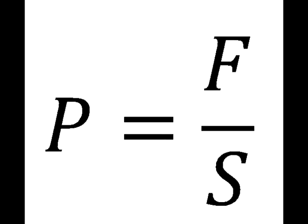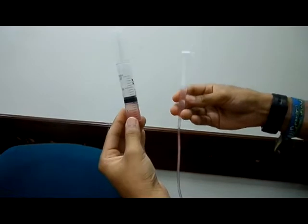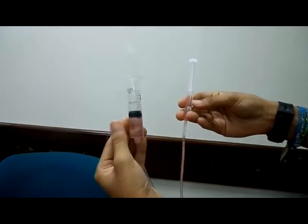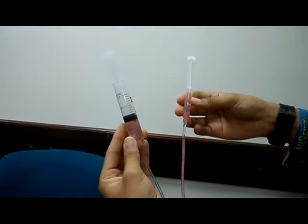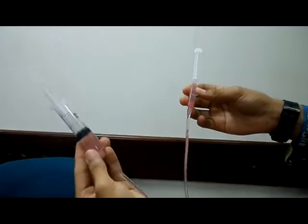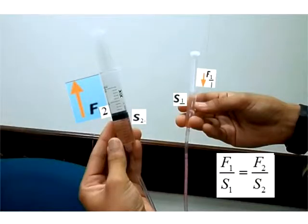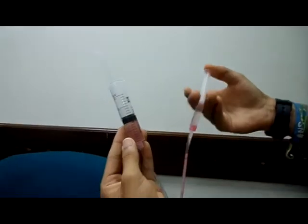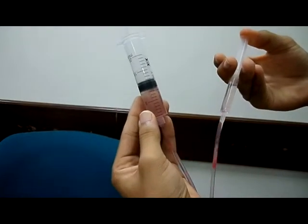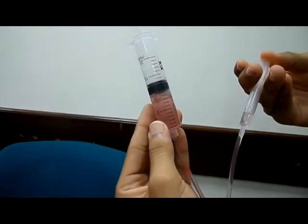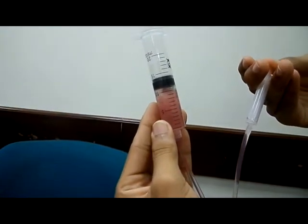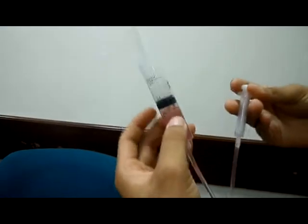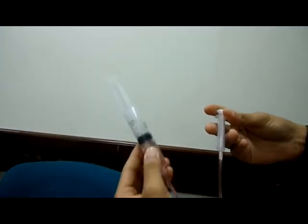We know that pressure is equal to force over area. So, since the pressure here is equal to the pressure here, we see that force 1 over area 1 is equal to force 2 over area 2. Here we can observe a small force over a small area. For that to be compensated, where the area is greater, the force has to be greater. And that is what we can observe here.